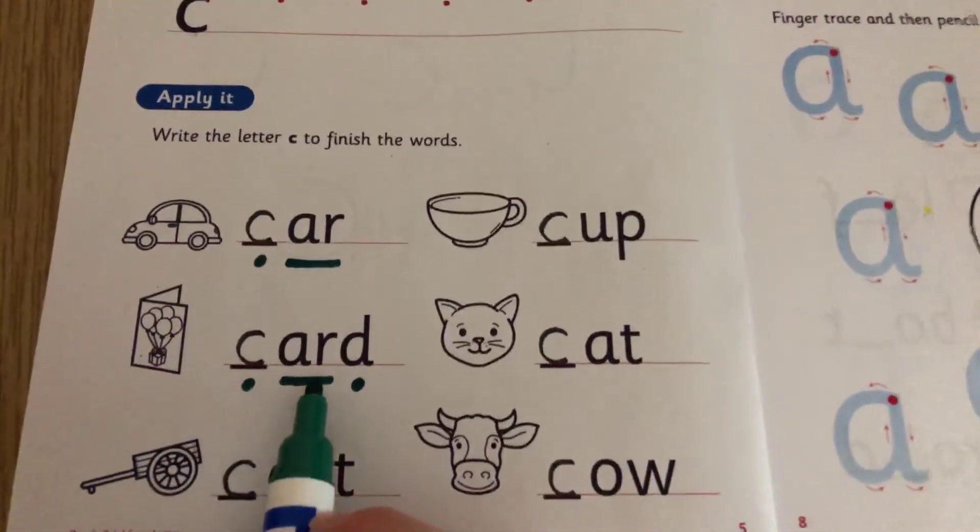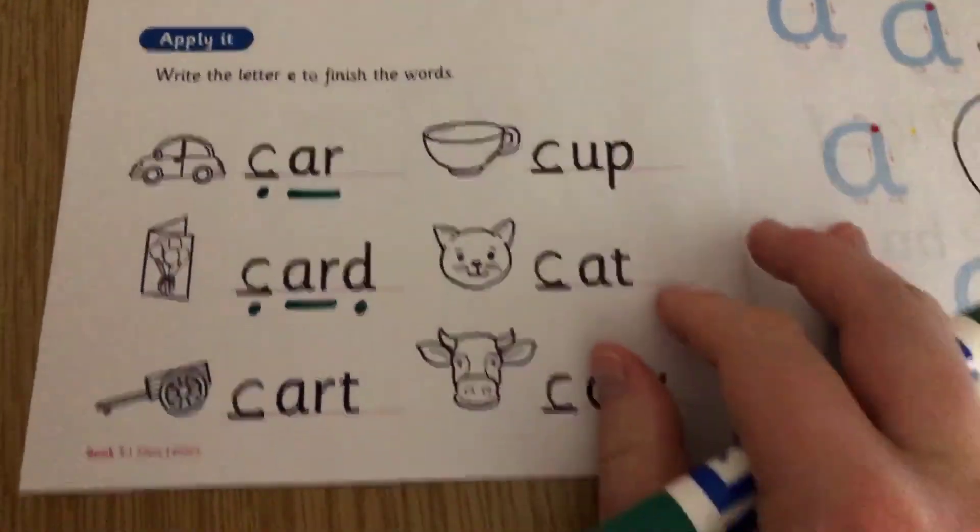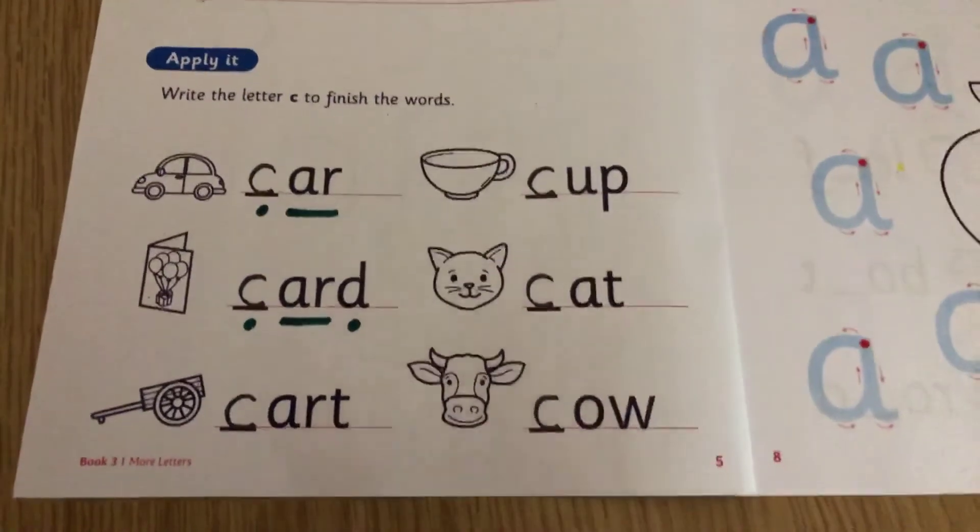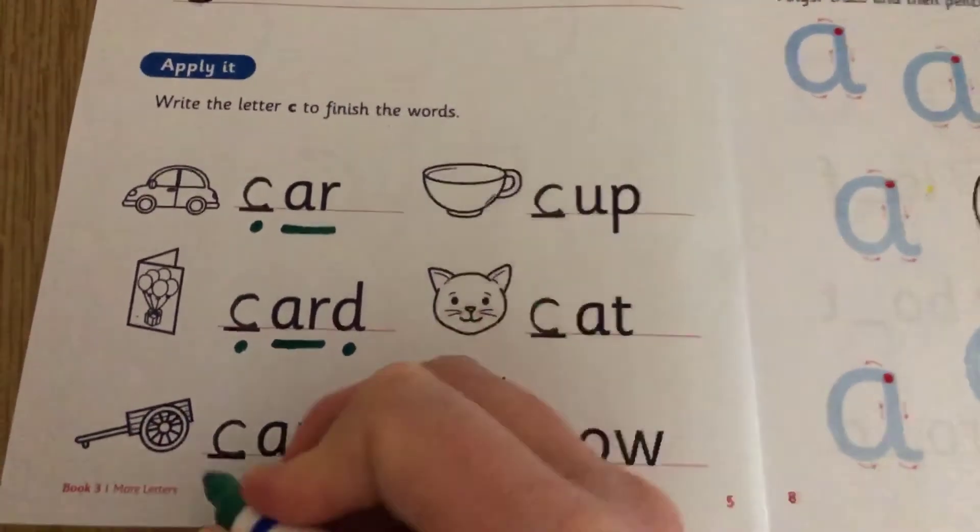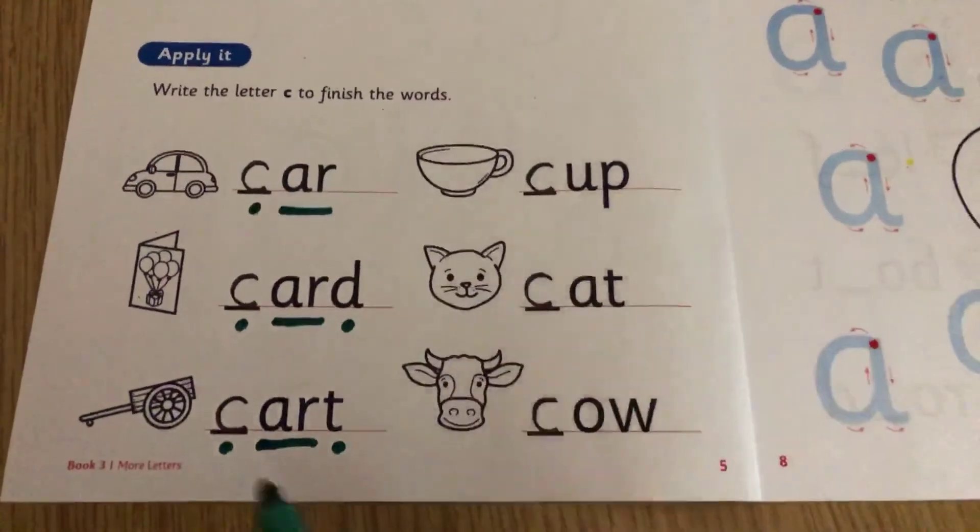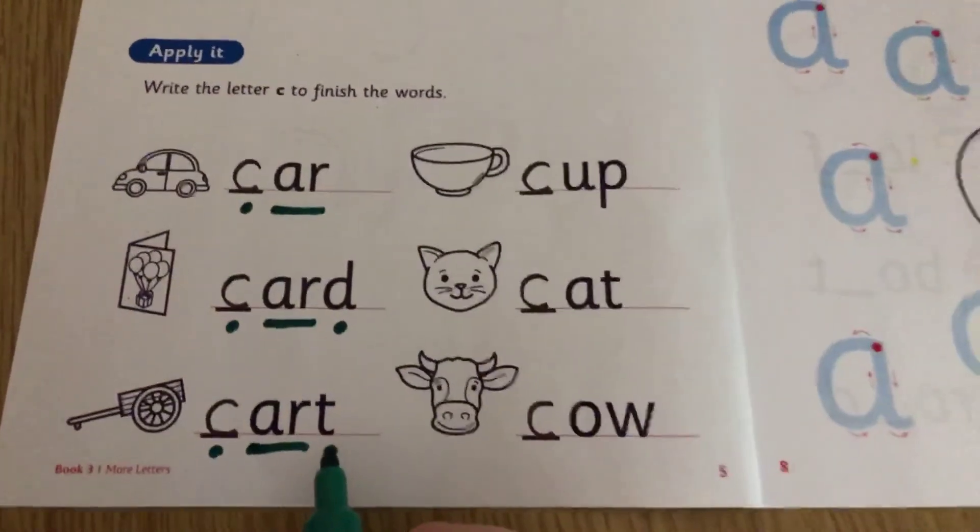So C, R, D, card. Can you spot it again here? It's quite handy, isn't it? Hit my buttons. Let's read it back. C, R, T, cart.